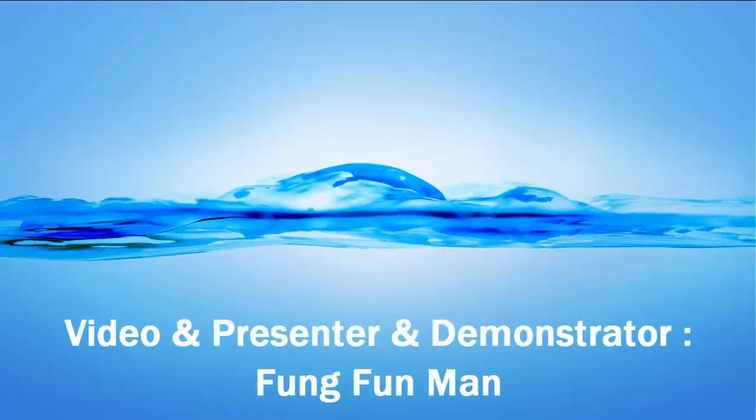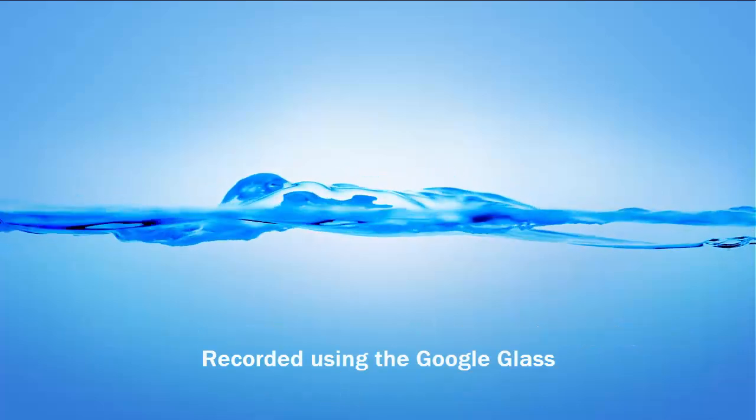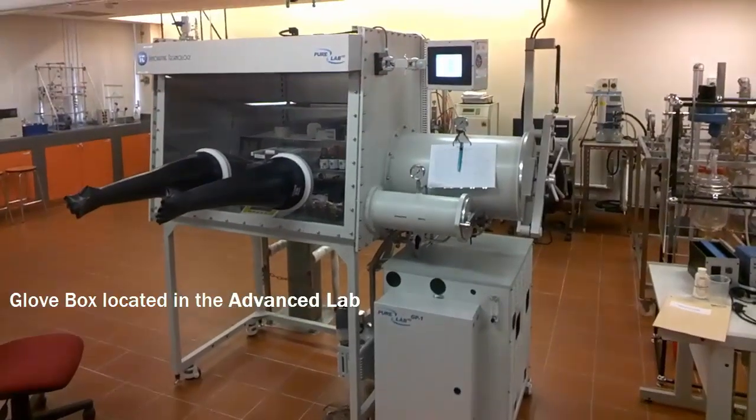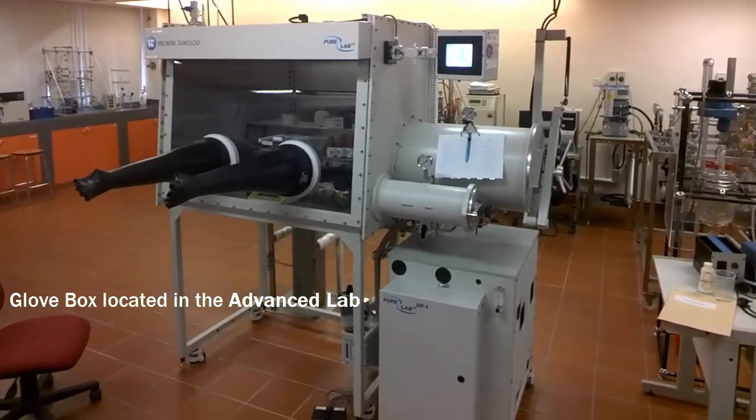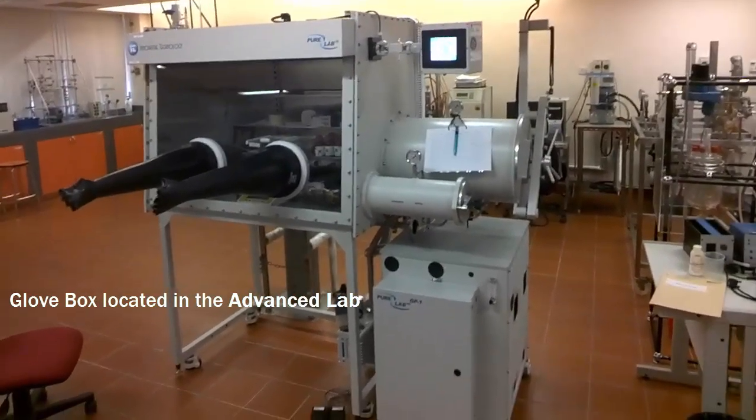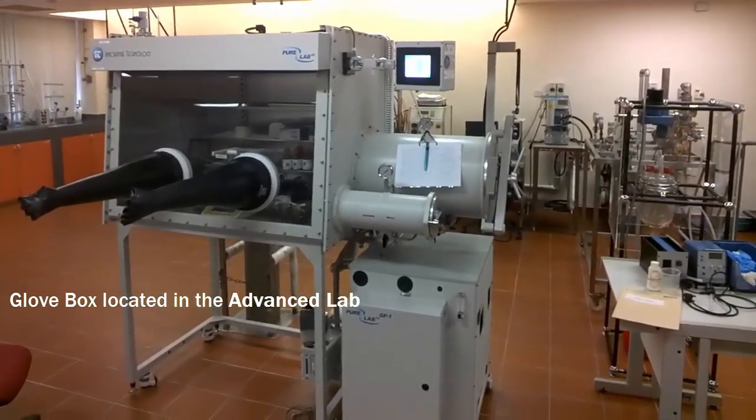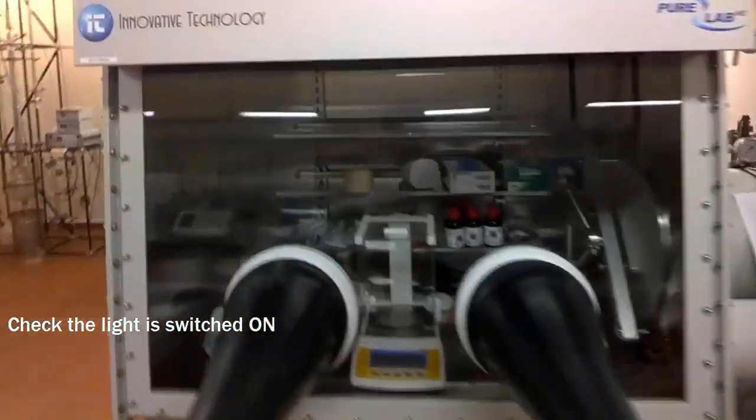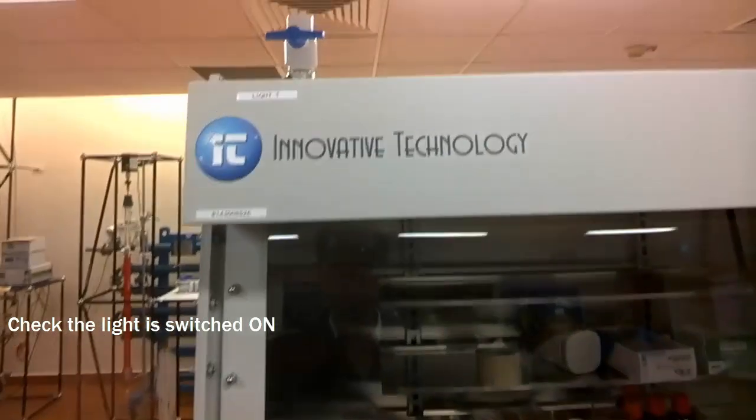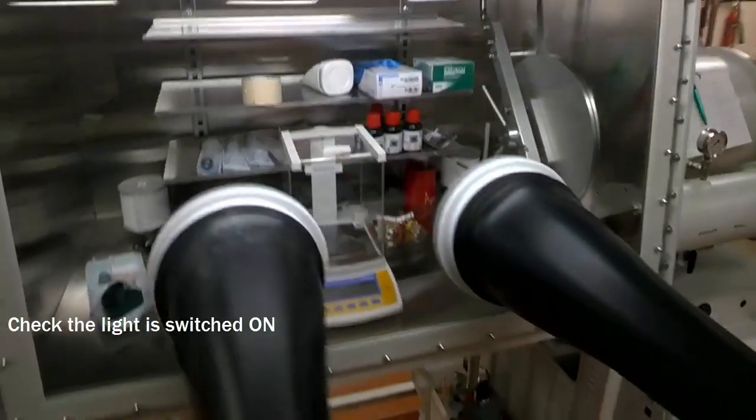Hi, in this video you will learn about how to operate the PureLab High Efficiency Glove Box. What I have in front of me is the PureLab High Efficiency Glove Box located in the Advanced Lab in the Chemistry Department of NUS. The first thing you have to do when you approach the glove box is to check that the light system is on. The switch for the light system is located at the top roof of the whole box. You can see my hands pressing on it. There's a label that says light.